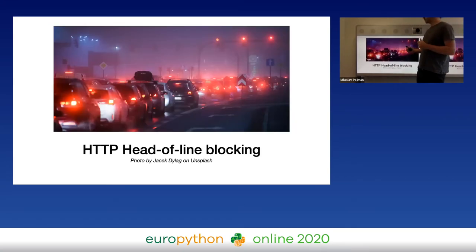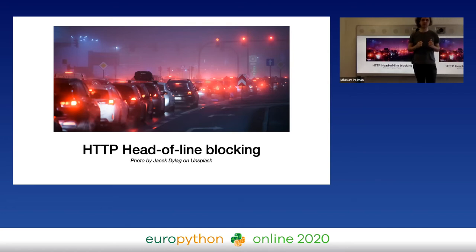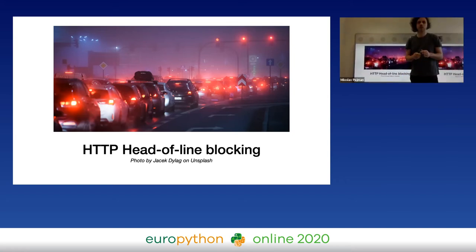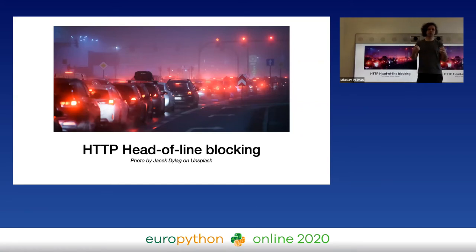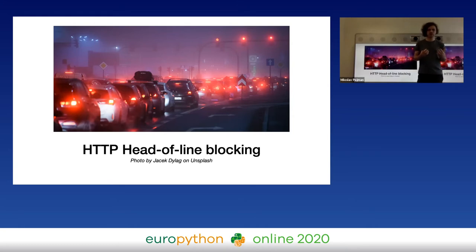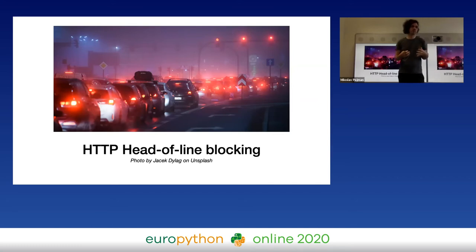This issue is called HTTP head-of-line blocking. HTTP requests are blocked until one of six connections is available. To minimize the consequences of head-of-line blocking, we invented JavaScript bundles or image sprites. The idea is simple: if you download fewer objects, you issue fewer requests and spend less time waiting. But downloading everything in one blob may not be the best idea, because you will be downloading much more than you need.